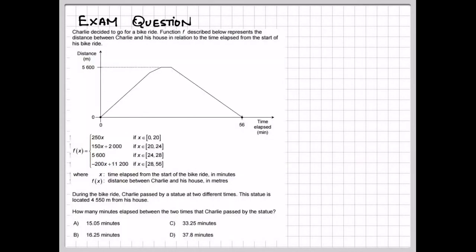Let's see an example of a question you might see on a final exam. Charlie decides to go for a bike ride. Function f described below represents the distance between Charlie's house in relation to time elapsed from the start of his bike ride. So we're given a graph, and under the graph we see f of x is equal to curly bracket, and there's four parts to this.